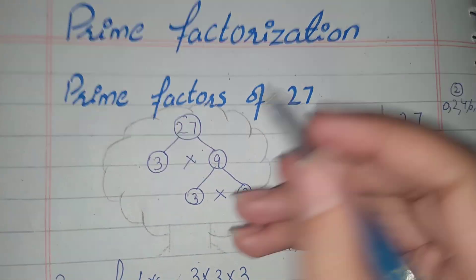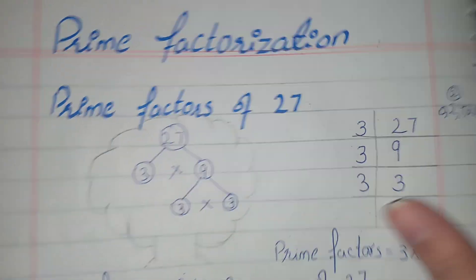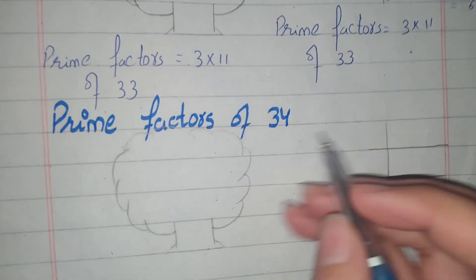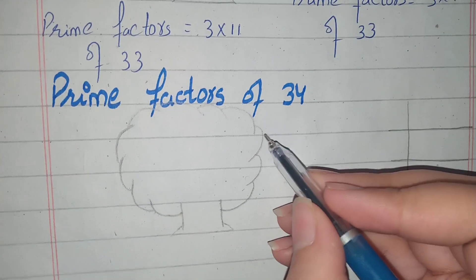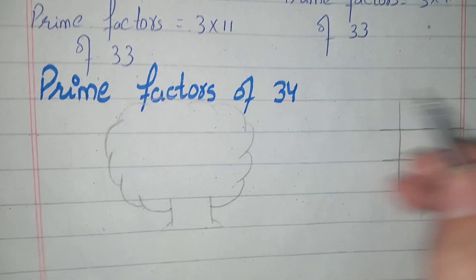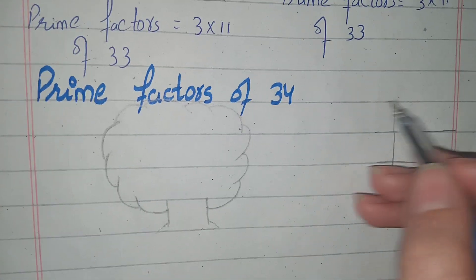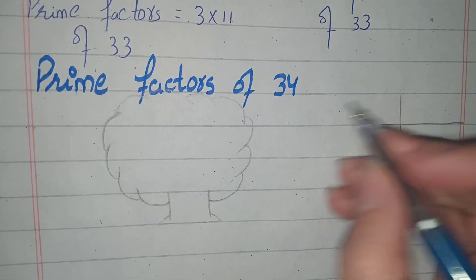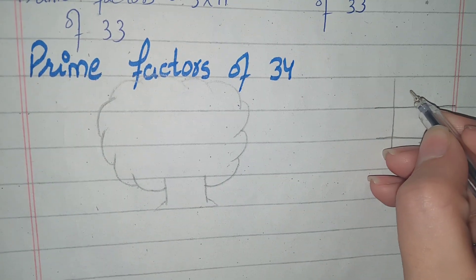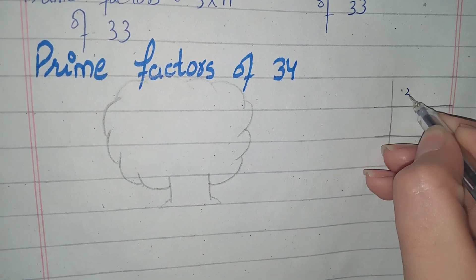Welcome to my channel. This topic is prime factorization. We will use prime factorization of 34. There are two methods: the factor tree method and the division method. First of all, we start with the division method, which finds prime factors.